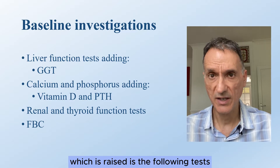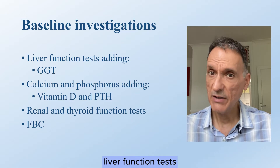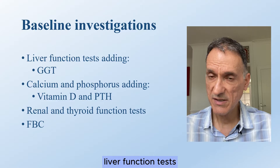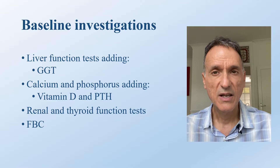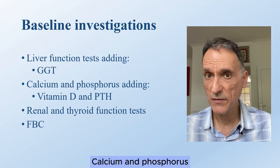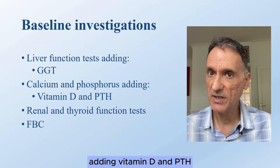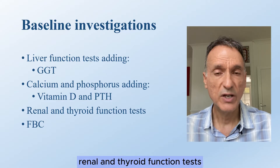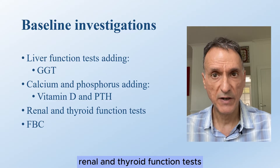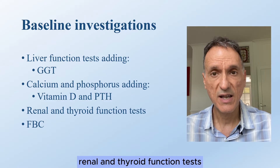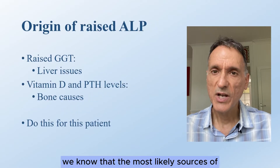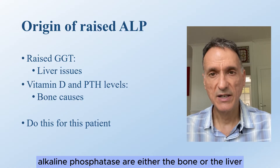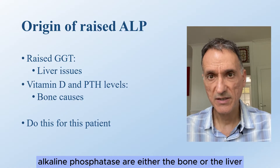The baseline investigations for someone with an isolated raised alkaline phosphatase level are: liver function tests, adding gamma GT, calcium and phosphorus, adding vitamin D and PTH, renal and thyroid function tests, and a full blood count.